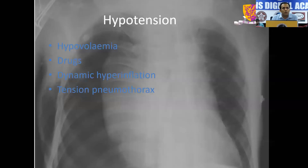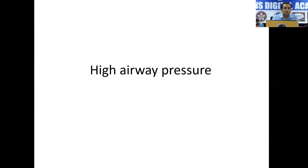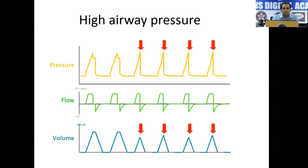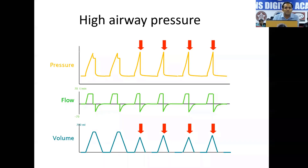Hypotension can also be because of tension pneumothorax. These are patients who have reduced lung compliance and can develop tension pneumothorax secondary to volume or pressure induced trauma. High airway pressure is another trouble we may encounter in ventilated patients — it can cause barotrauma and also inadequate ventilation. This is how it looks: the pressure curve in yellow — the first two curves represent a normal pressure curve, and once the pressure increases, you can see the abrupt cutoff; the volume curve shows that the adequacy of volume delivered has come down, causing inadequate ventilation.